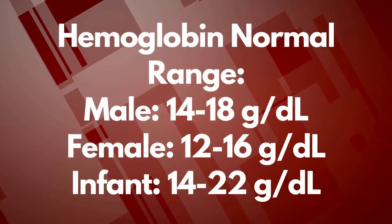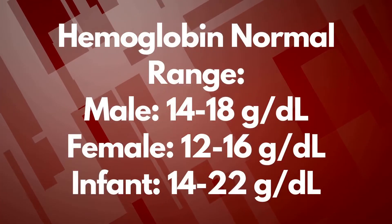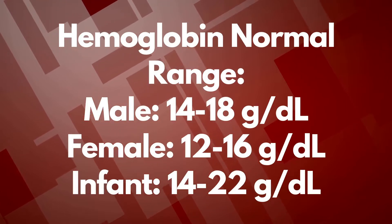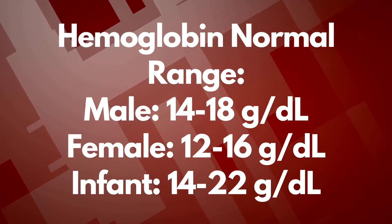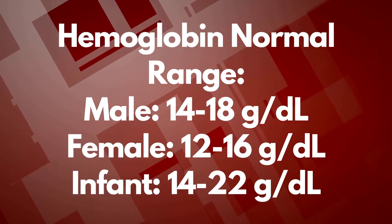For hemoglobin, normal values are 14 to 18 grams per deciliter for males, 12 to 16 grams per deciliter for females, and 14 to 22 grams per deciliter for infants. Now let's move on to RBC indices.